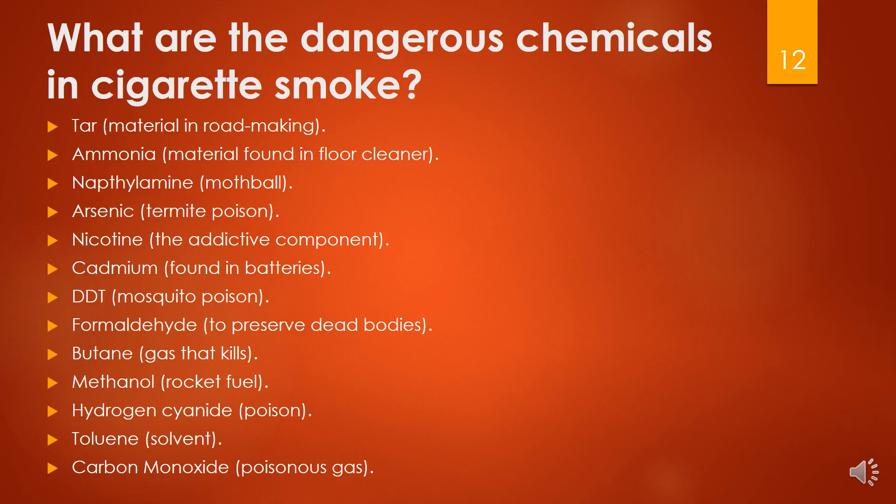What are the dangerous chemicals in cigarette smoke? Tar, ammonia, naphthalamine, arsenic, nicotine, cadmium, DDT, formaldehyde, butane, methanol, hydrogen cyanide, toluene, and carbon monoxide. These are some of the dangerous chemicals emitted after smoking a cigarette.